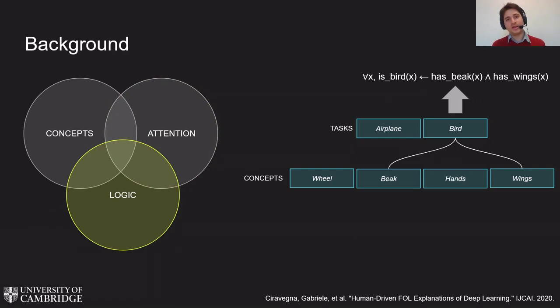And finally, with logic systems, we can interpret attention scores to extract a symbolic interpretation of the predictions, such as if a sample has both a beak and a pair of wings, it's likely we are looking at a bird.